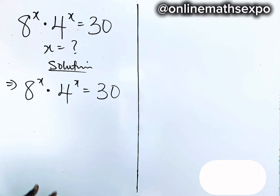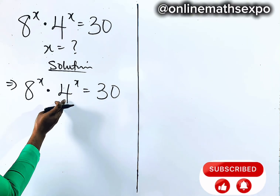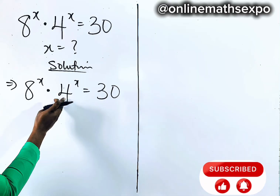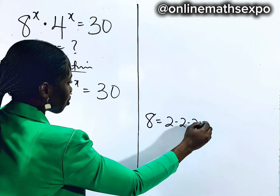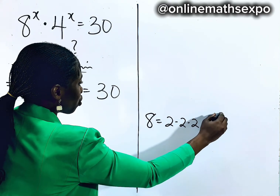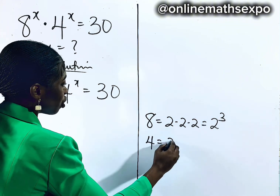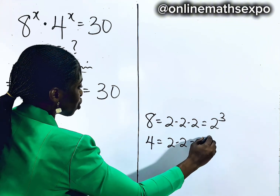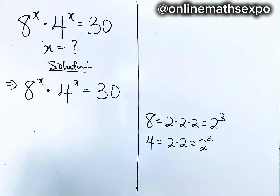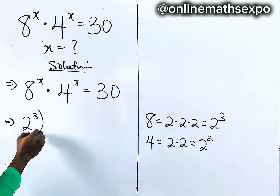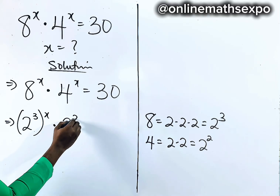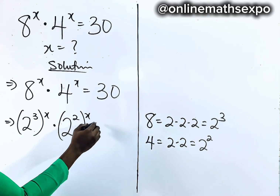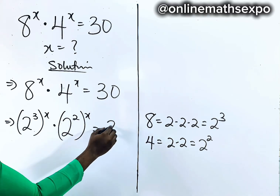What we do is take this to share a common base. We know that 8 is 2 multiplied 3 times, which is 2 cubed. And 4 is 2 multiplied 2 times, which is 2 squared. So we can rewrite this to have 2 to the power of 3 raised to power x, multiplied by 2 squared raised to power x, is equal to 30.